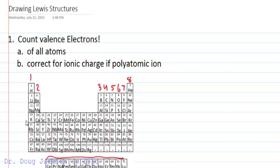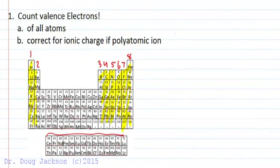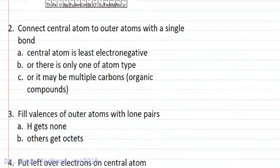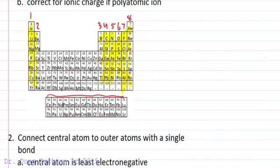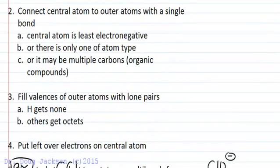We won't be running into many transition metals in this discussion of Lewis structures. Just the main group elements are what we are primarily concerned with. Next, we want to connect the central atom to outer atoms with a single bond, and the central atom is going to be the least electronegative. So if we know that fluorine is the most electronegative element and electronegativity increases up and to the right, the farthest away from fluorine is going to be our central atom.